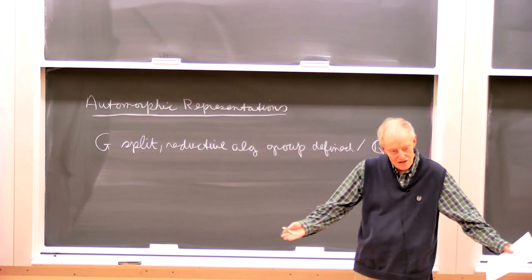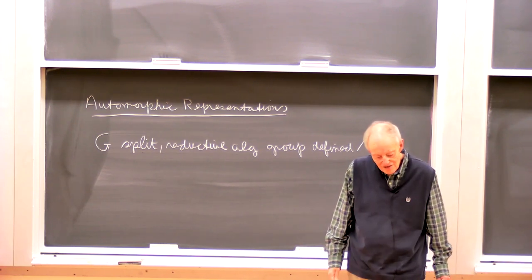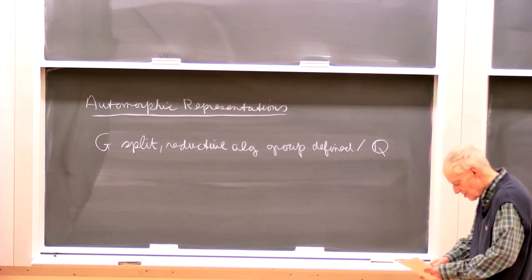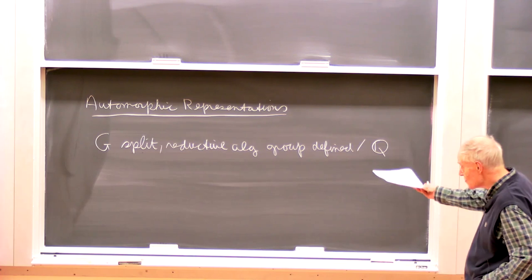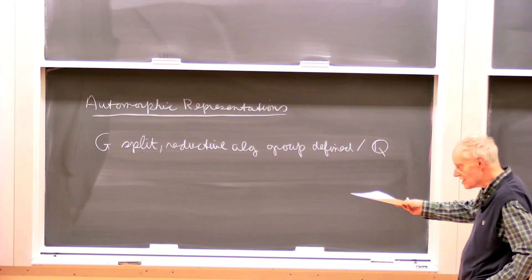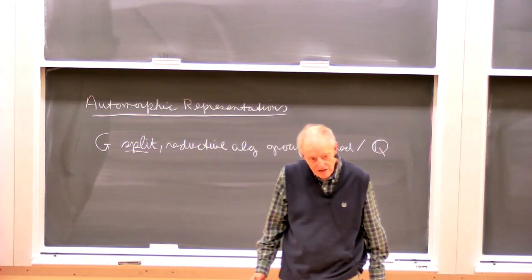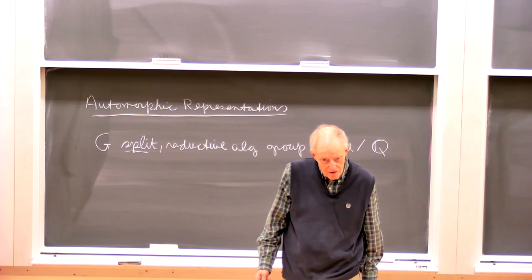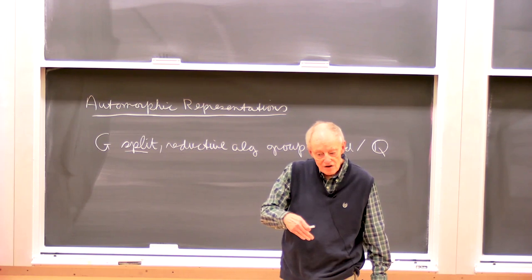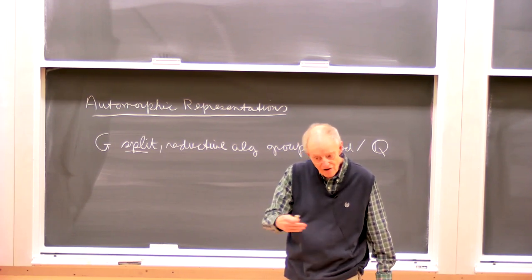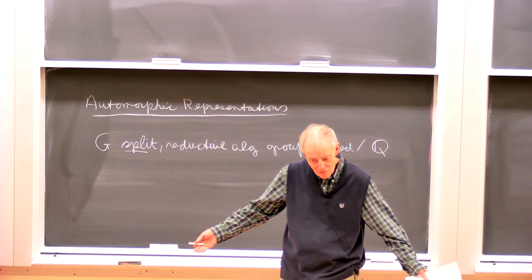An algebraic group is like a Lie group, except it's defined by algebraic equations — it's an algebraic variety with a multiplication on it. It's just all of the things one is familiar with if one knows semisimple Lie groups. A reductive one is a semisimple one times — the direct product of a semisimple one with an abelian one. That's a slight generalization. Split means that it has a maximal abelian subgroup which is defined over Q. Most semisimple Lie groups end up being the real points of an algebraic group, so the two are more or less the same.